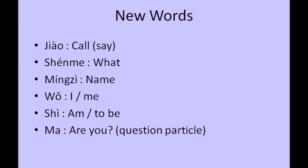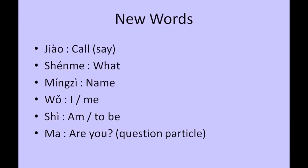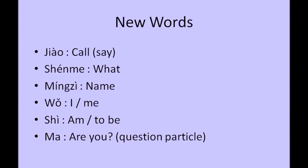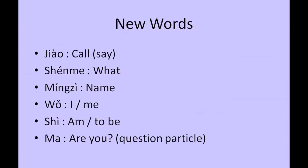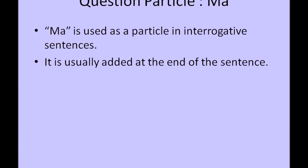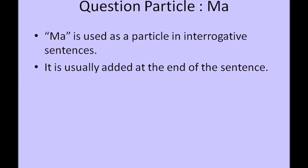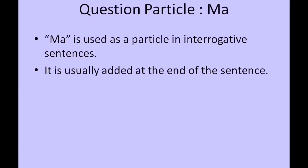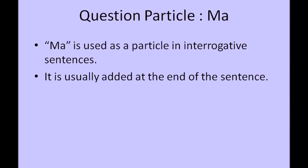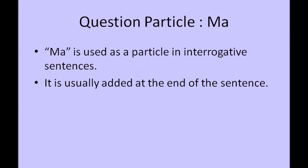是 is used to mean am or to be. 吗 is used as a question particle — a few fundamentals, which is why learning them is very important to frame sentences with ease. To be specific about 吗, it is a particle which is used in interrogative sentences, which roughly translates to 'are you.' It is usually added at the end of the sentence.